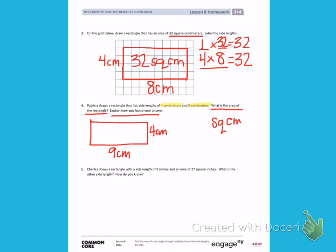Number 5: Charles draws a rectangle with a side length of 9 inches and an area of 27 square inches. What is the other side length? How do you know? Let's demonstrate with a picture. We know one side length is 9 inches. We know the area is 27 square inches. We are missing one of the lengths. This is a similar problem to those we did on the front, so you can look back at the front to help you finish. You want to find the missing number in the area, then you want to write in words how you know that is the missing number.